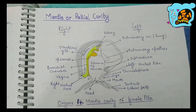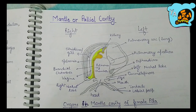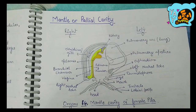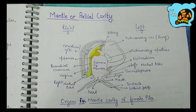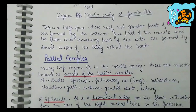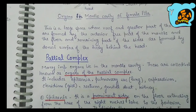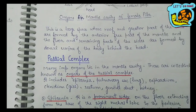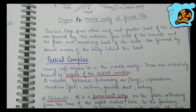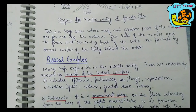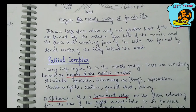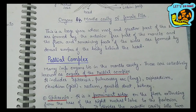Here we can see various organs. All the organs present in the mantle cavity are collectively known as organs of the paleal complex. The mantle cavity has a roof and floor, and the various organs present include: epithenia, pulmonary sac (also known as lung), ospheridium, ctenidium or gill, rectum, genital duct, and kidney.